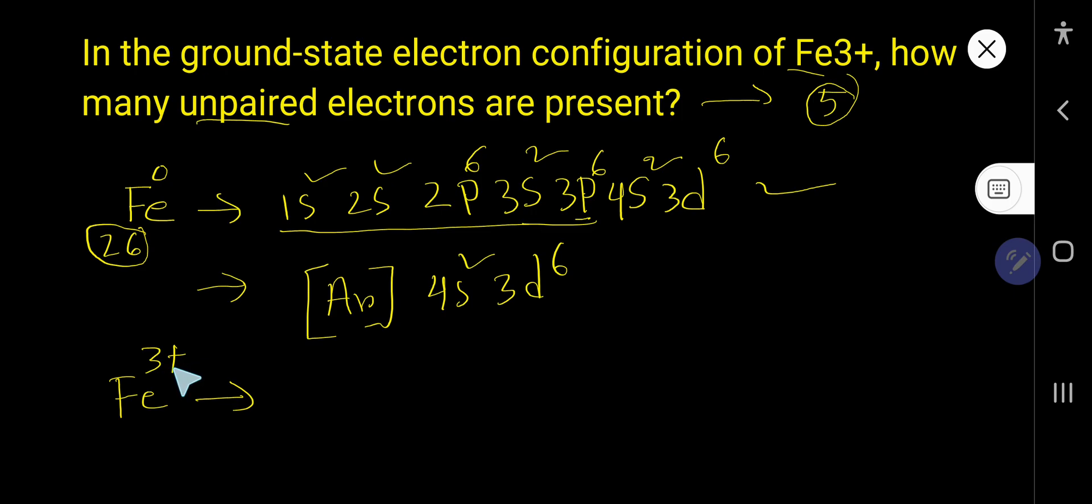For Fe3+, you need to remove three electrons. Two electrons will go from the 4S subshell. So here you will get zero and one more will go from 3D. So you will have five. This is the electron configuration of iron 3 plus.